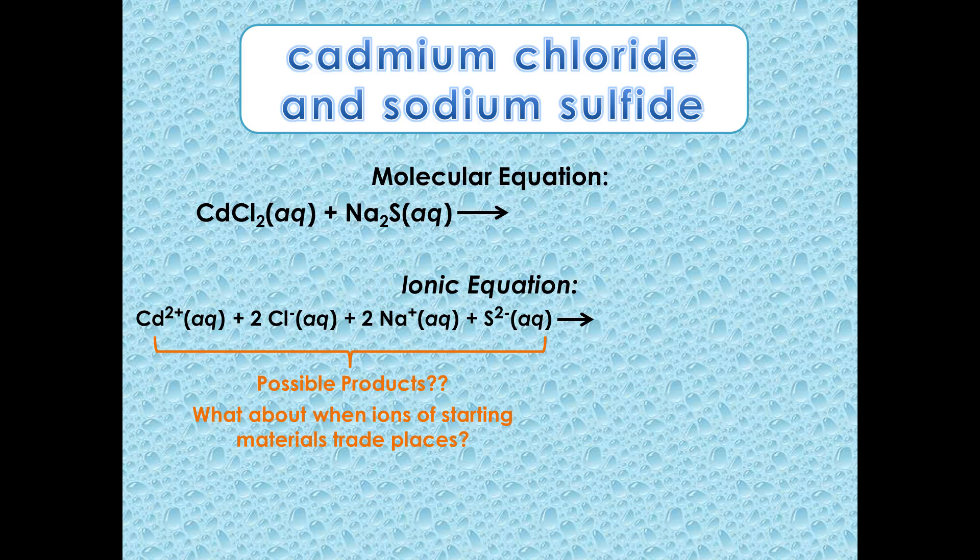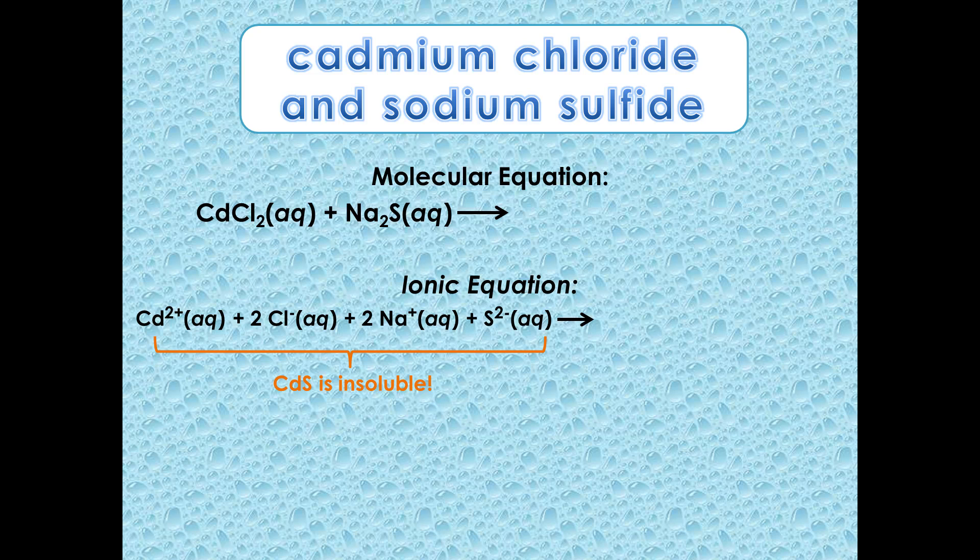When the ions of the starting materials trade places with each other, consider the possible products, or simply analyze all the ions in solution and see whether or not any of them could combine to form a solid. What do you find? Your solubility guidelines are key in this step. If you refer to table 6-1 in your manual, you'll see that sulfides are insoluble, excluding those of group 1 cations. This is why cadmium sulfide, or CDS, is formed as the solid product.